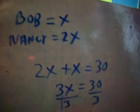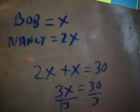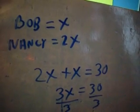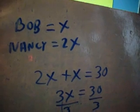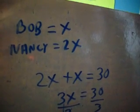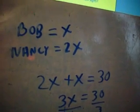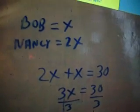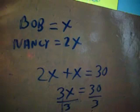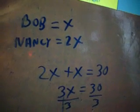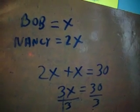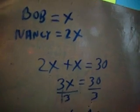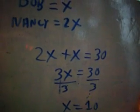So we add Bob and Nancy's ages together. 2X plus X equals 30. X being Bob's age, X times 2 being Nancy's age. Well 3X equals 30. Well if we divide 30 by 3 to cancel out that 3 on both sides of the equation, we get X equaling 10.